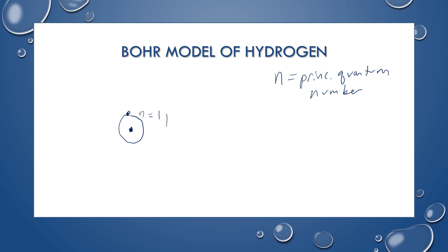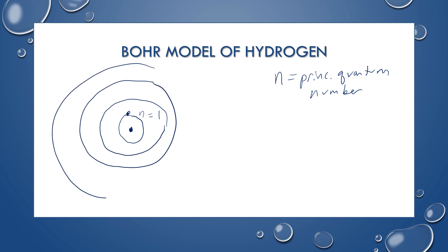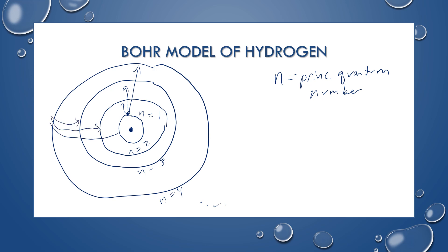There are other energy levels as well, and as you get further and further away from the nucleus, you get higher and higher energy levels: N equals 2, N equals 3, N equals 4, etc. The electron in hydrogen can actually move between those energy levels. If the electron gains energy, it can move to a higher energy level, and once there, it can release energy to move back down to a lower energy level. The lowest energy configuration is called the ground state, and anything higher than that is called the excited state.